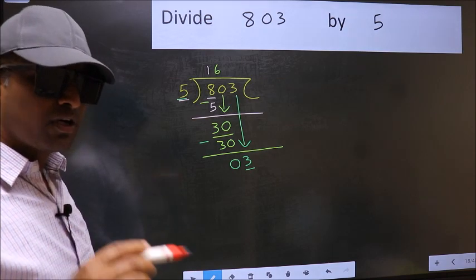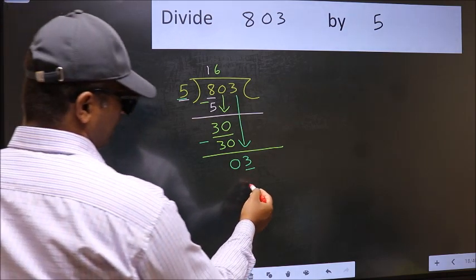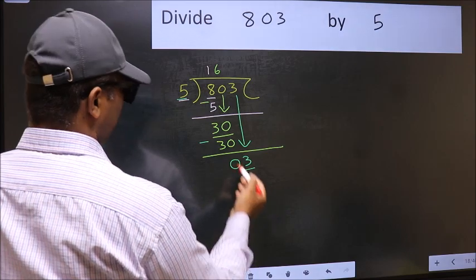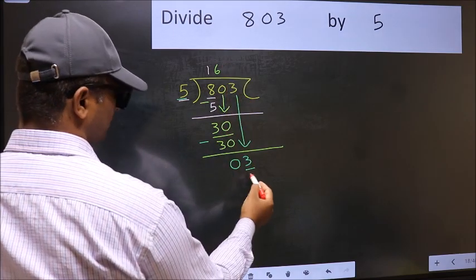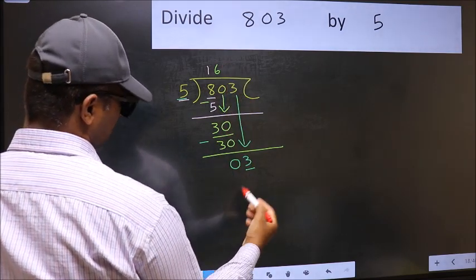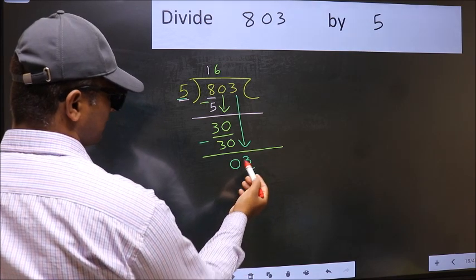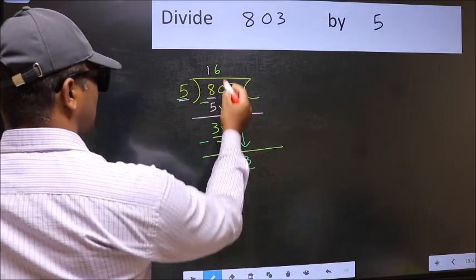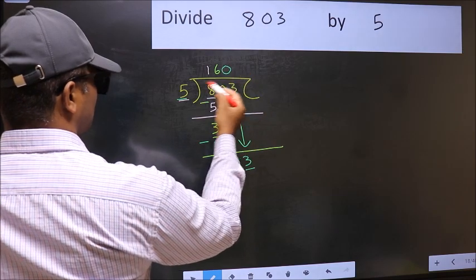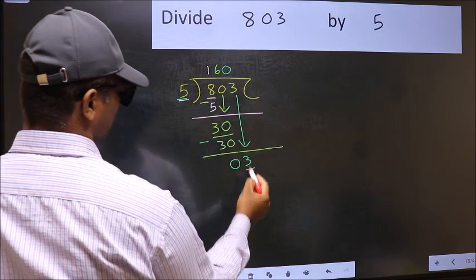Instead, what you should think of doing is, what number should we write here? If I take 1, we will get 5. But 5 is larger than 3. So, what we should do is we should take 0. So, 5 into 0, 0.